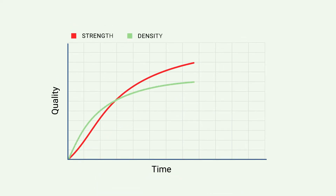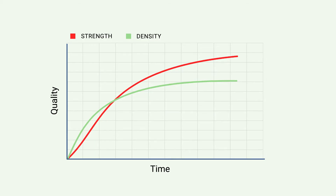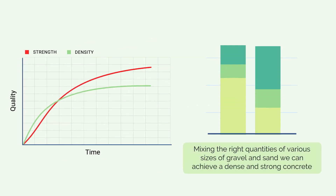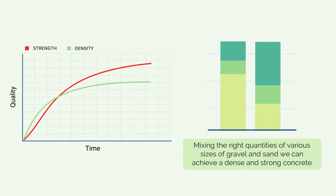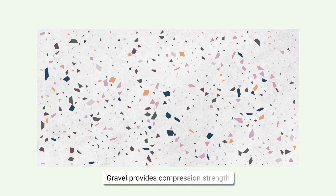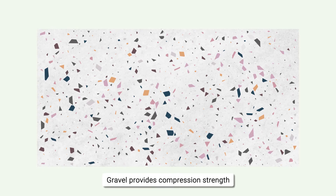The density and strength of the finished concrete also depends on the distribution of the particle sizes. By mixing the right quantities of various sizes of gravel and sand, it is possible to achieve a dense and strong concrete. The gravel part of the aggregate forms the skeleton of the concrete, providing its compression strength.